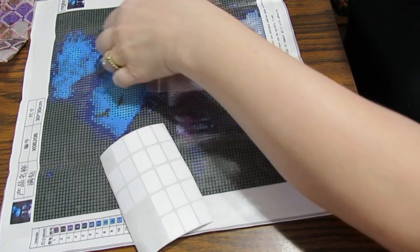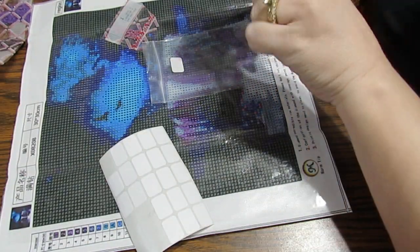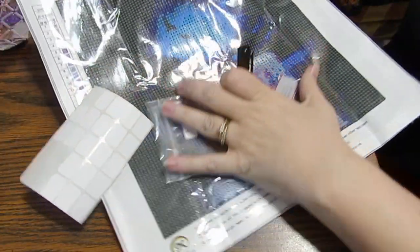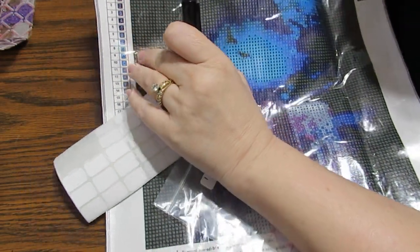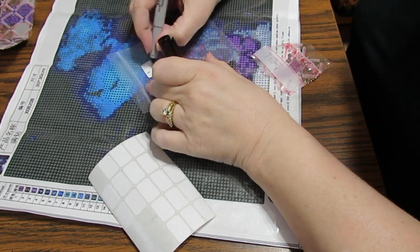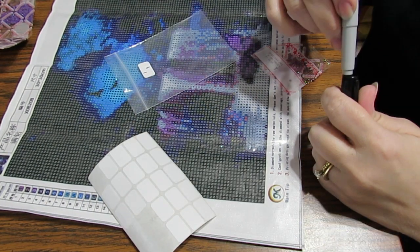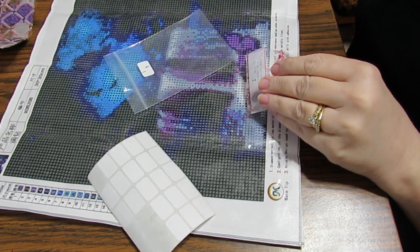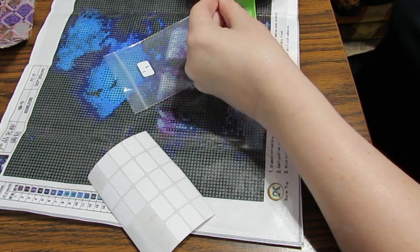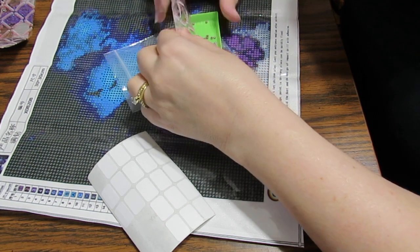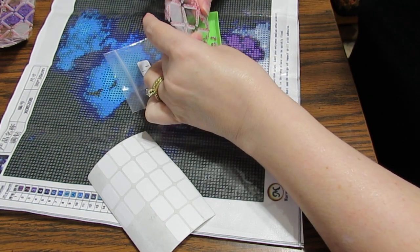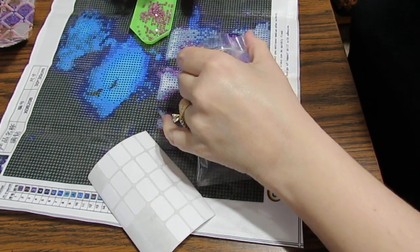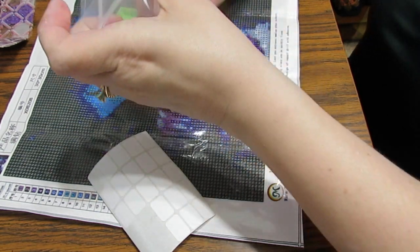And I'm just going to put this sticker here. And the baggie had the one on it. So I'm going to put a number one on the baggie. And when I look at the symbol here, it was a number one. So I'm just going to put the number one again, because that is the code. If I want, I can put the DMC number on there, but I'm not going to do that at this point. I'm going to go ahead and empty the rest of these diamonds into my tray.